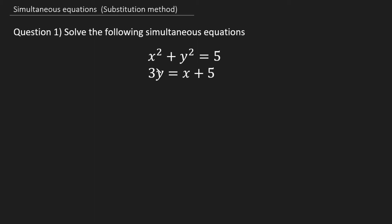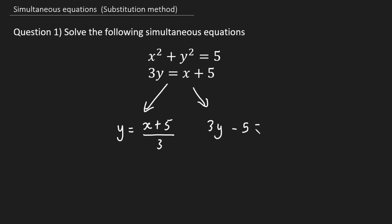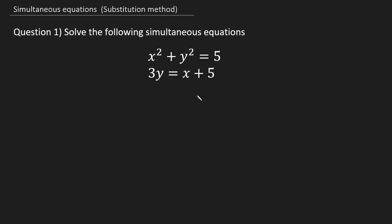Your first step is to rearrange for y or x in the linear equation. It's your choice, however sometimes it's beneficial to rearrange for one rather than the other. If I choose to rearrange for y, I'm going to divide both sides by 3 and get y = (x + 5) / 3. If I choose to rearrange for x, I get 3y − 5 = x. Rearranging for x gives a cleaner expression rather than a fraction, so I'd much prefer to work with that, though you'd still get the same answer either way. With time and practice you can make this decision intuitively.